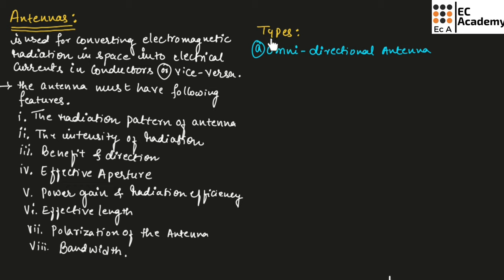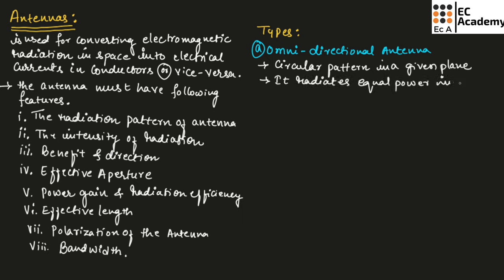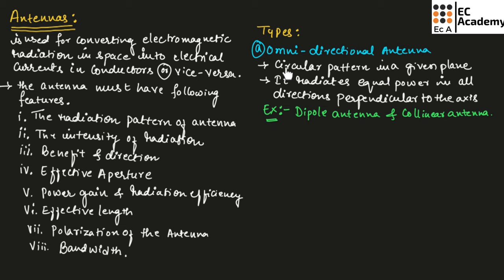Let us discuss different types of antenna. The first one is the omnidirectional antenna. The omnidirectional antenna has a circular pattern in a given plane — it radiates equal power in all directions perpendicular to the axis. Examples of omnidirectional antennas are the dipole antenna and collinear antenna.